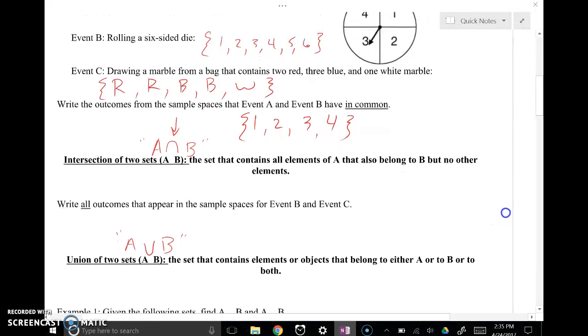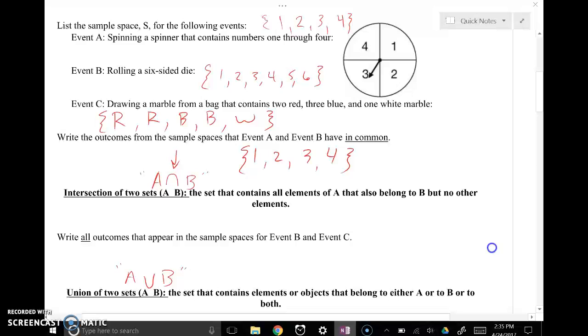And then it says write out all the outcomes for B and C. So for all the outcomes for B and C, that means you can roll a 1 and get a blue, roll a 1 and get a red, roll a 1 and get a white, roll a 2 and get a blue, roll a 2 and get a red, roll a 2 and get a white. You see where this is heading.